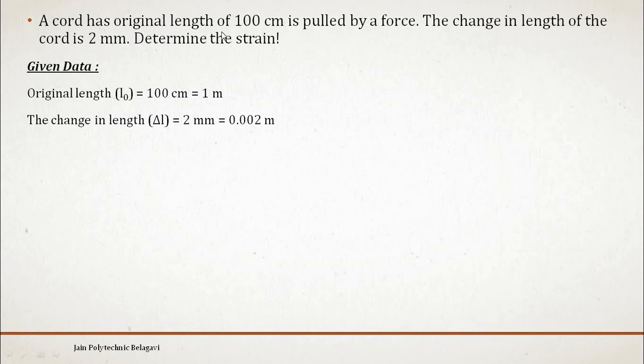Second problem: a cord has an original length of 100 centimeters, it is pulled by a force. The change in length of the cord is 2 mm. Determine the strain. Given data: original length is given by L₀, 100 centimeter is 1 meter.